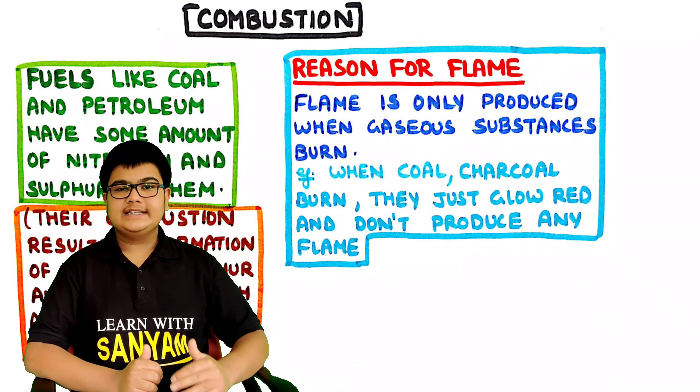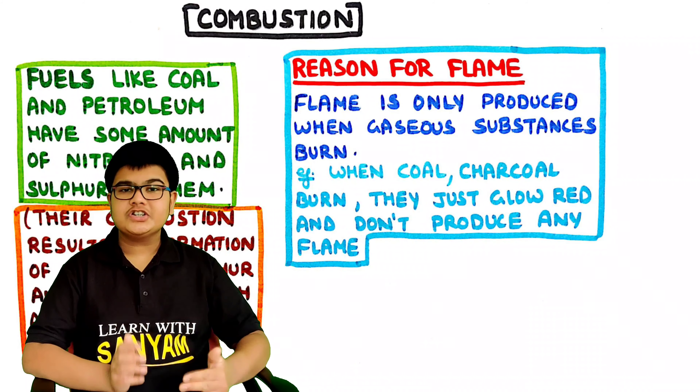Now let's see what is the reason for the production of flame. Flame is only produced when gaseous substances burn. When solid substances like coal or charcoal burn, they don't produce a flame — they just glow. So flame is only produced when gaseous substances burn, like LPG, kerosene, etc.